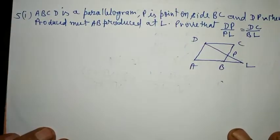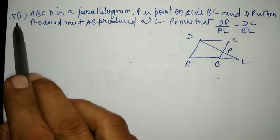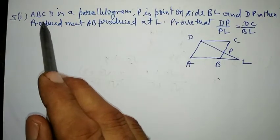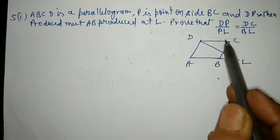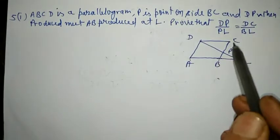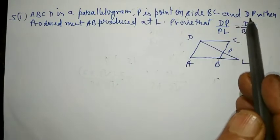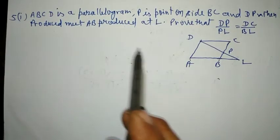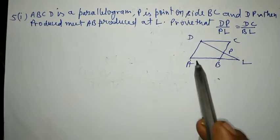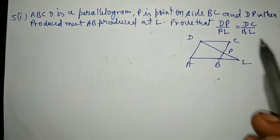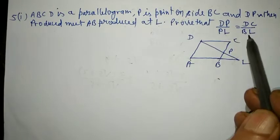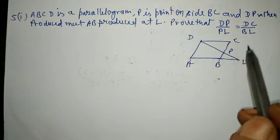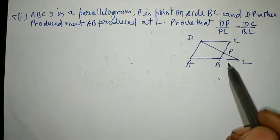Next question, question number 5, part first. ABCD is a parallelogram. P is a point on BC. When DP is produced, it meets AB produced at L. We have to prove: DP upon PL is equal to DC upon BL.